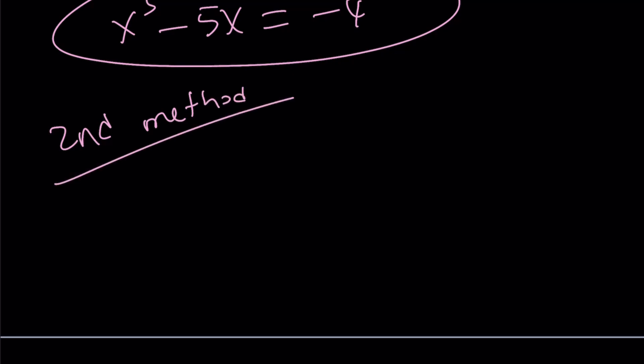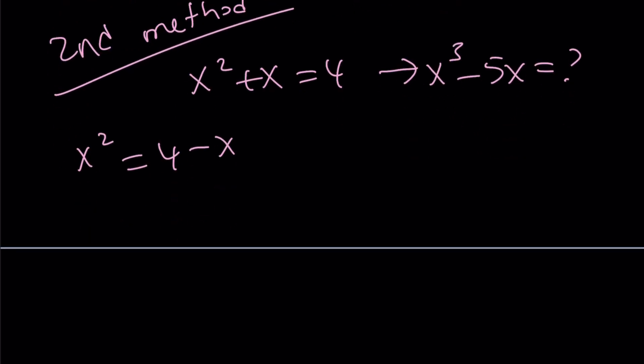So here's the second method. Again, we are given this and we're supposed to evaluate this expression. How do I go about that? I'm going to go ahead and isolate x squared, write it as 4 minus x. And then from here, I'll do the following.